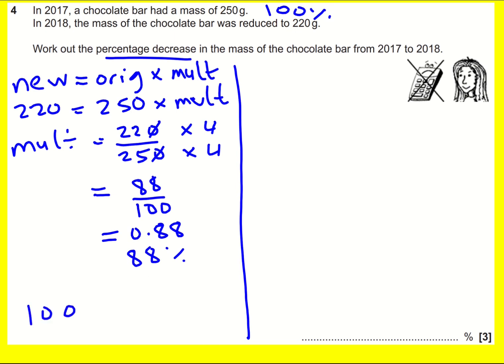What is my percentage decrease? Well, it was 100% and it's gone down to 88%, therefore the percentage decrease is 100 minus 88, which is 12%.